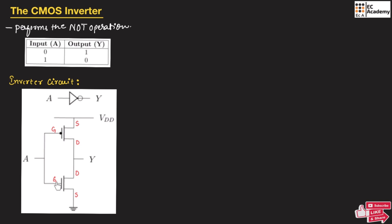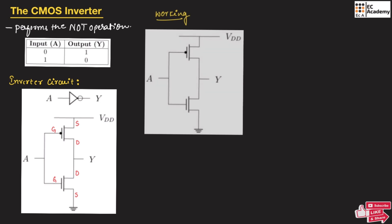At the bottom, we have an NMOS transistor where the source is connected to ground, the gate is connected to input A, and the drain is connected to the output.